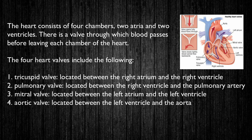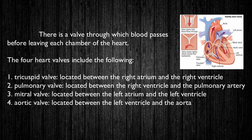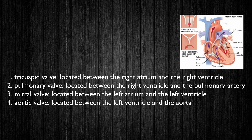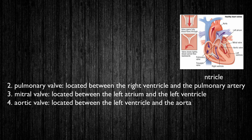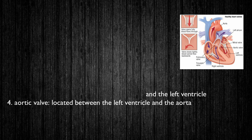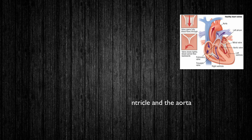The four heart valves include the following: tricuspid valve, located between the right atrium and the right ventricle; pulmonary valve, located between the right ventricle and the pulmonary artery; mitral valve, located between the left atrium and the left ventricle; aortic valve, located between the left ventricle and the aorta.